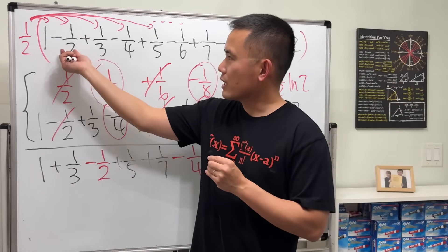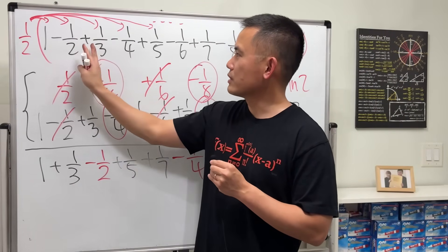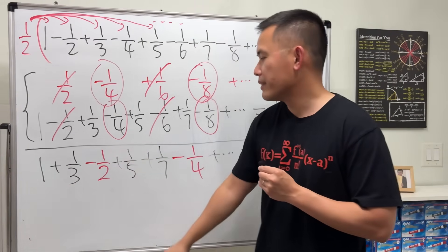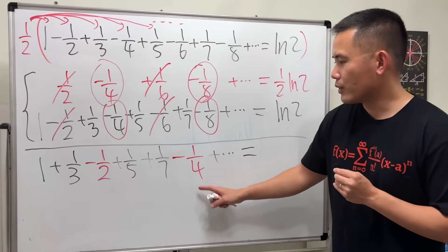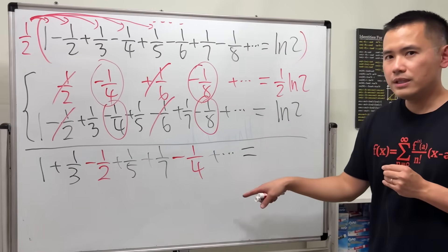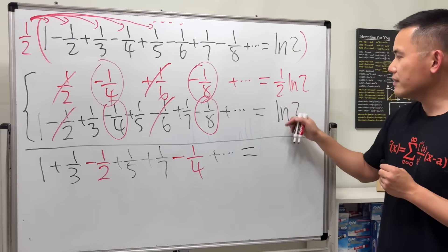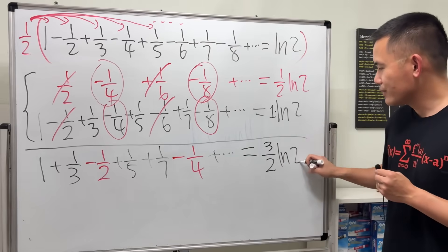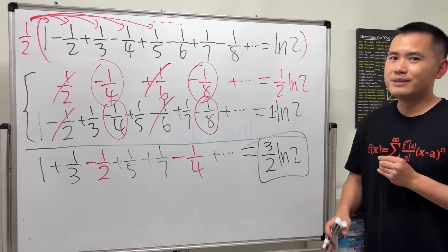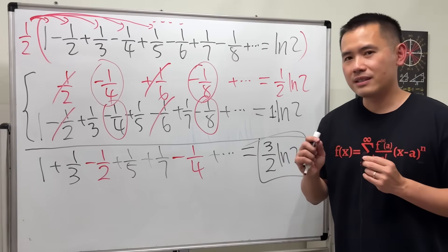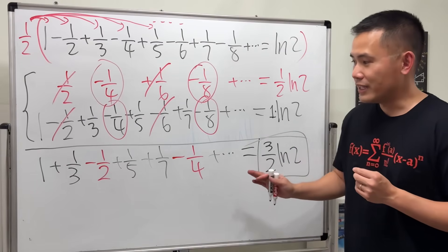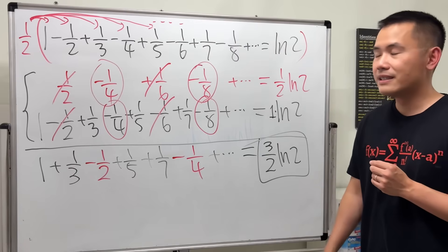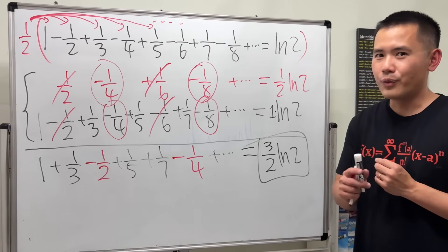What we've done is effectively rearrange the series: two odd-denominator terms followed by one even-denominator term. The result is 1/2 times ln(2) plus ln(2), which is (3/2)ln(2). So if you only have conditional convergence, do not rearrange the terms — the sum will be different depending on how you arrange them. That's why we care about absolute convergence.